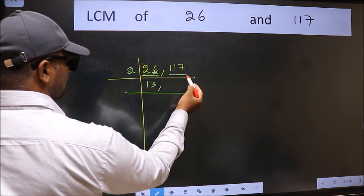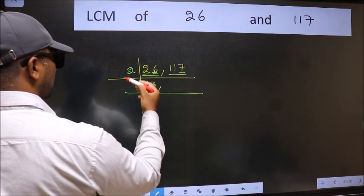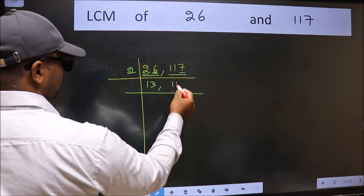The other number 117, last digit 7, not even. So this number is not divisible by 2. So you write it down as it is.